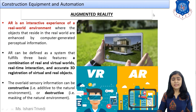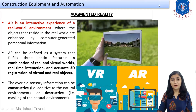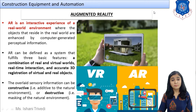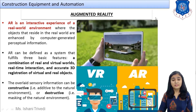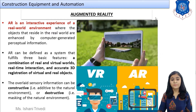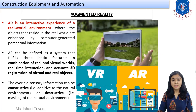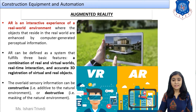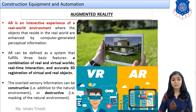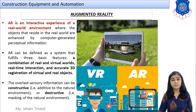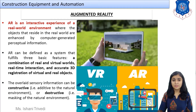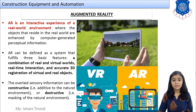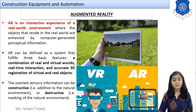AR is an interactive experience of the real world environment. In virtual reality, we were just making people imagine that they are in a virtual world, experiencing it. In augmented reality, we are making it an interactive experience — meaning you can explore it, you can touch it, you can interact with it. So augmented reality is where objects that reside in the real world are enhanced by computer-generated perceptual information. Even existing systems can be converted into computer-generated perceptual information.